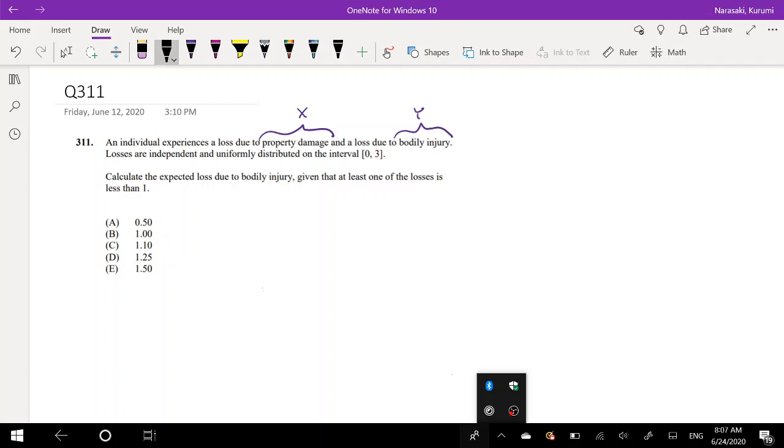Losses are independent and uniformly distributed on the interval 0 to 3. So let me actually just draw the picture real quick. So from 0 to 3, for x and y, it's uniformly distributed. So we're trying to find the expected loss due to bodily injuries. Bodily injuries we said was expected on y.